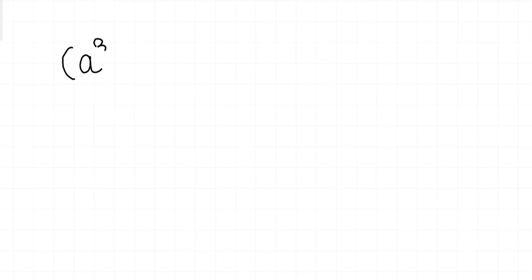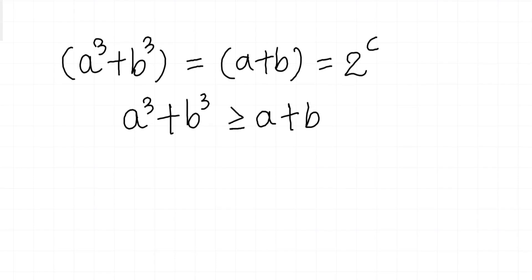So now A³ plus B³ is equal to A plus B is equal to 2 to the power C. But as you know, A³ plus B³ is always greater than or equal to A plus B. And these inequalities hold with equality only when A is equal to B.